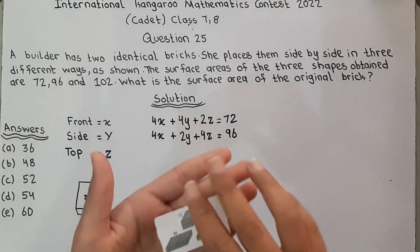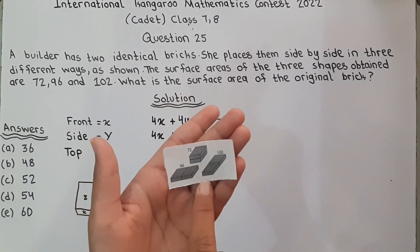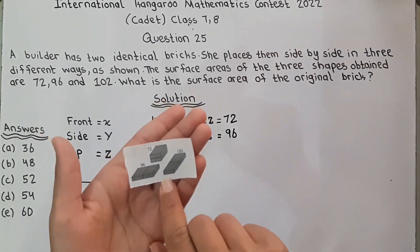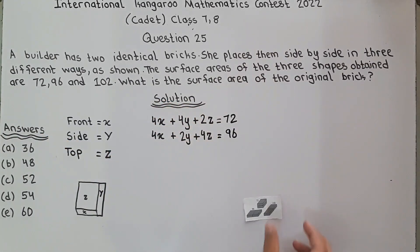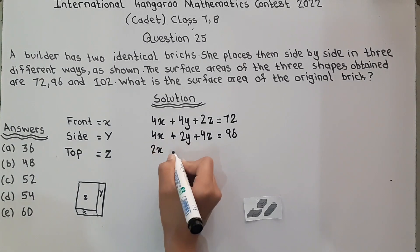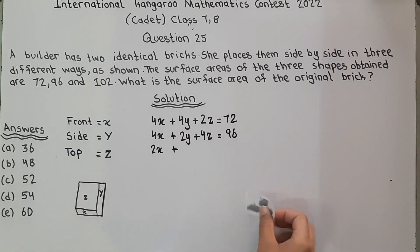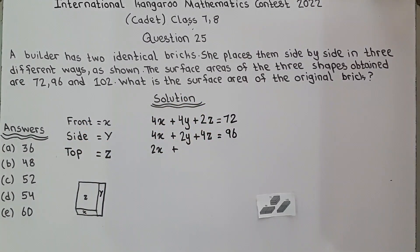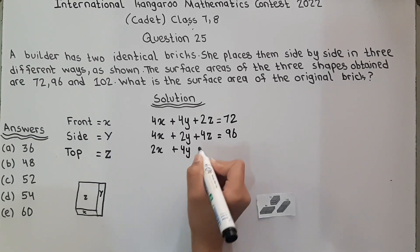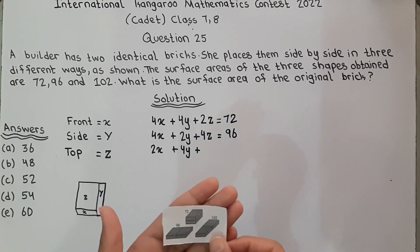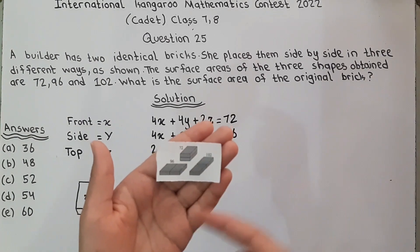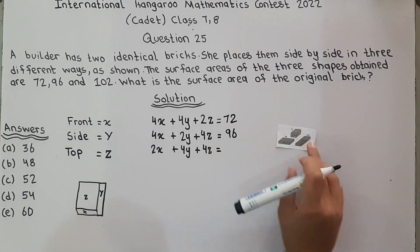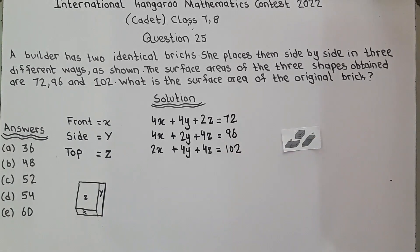For the third arrangement: the fronts give 2X. The sides — there are 1, 2, 3, 4 — giving 4Y. And the top faces, 1, 2 and beneath makes 2, so 4Z. The equation is: 2X plus 4Y plus 4Z equals 102.